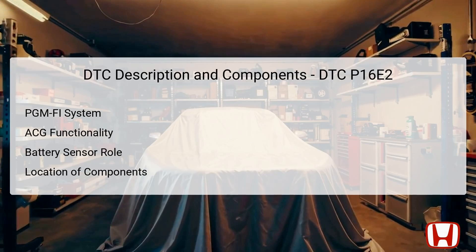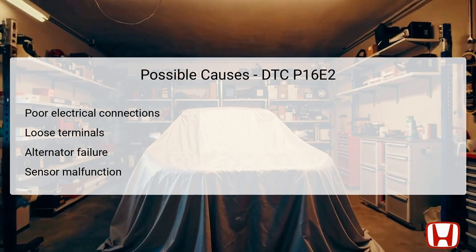The PGM-FI system involves multiple components that work in synergy to maintain engine performance. PGM-FI regulates the injection of fuel into the engine for optimal combustion. The ACG, or alternator, ensures the vehicle's electrical systems and battery remain charged, making it essential for the vehicle's overall functionality. The battery sensor monitors the charge state of the battery and communicates critical information to the PCM over a Local Interconnect Network (LIN). The PGM-FI and alternator assembly are typically found under the hood, while the battery sensor is located on or near the battery. When DTC P16E2 appears, it indicates a failure in the communication channels among these components, which can lead to performance issues and necessitates immediate investigation.